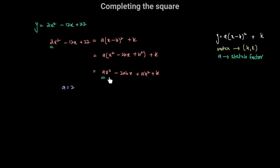The coefficients of x also have to be the same on both sides. On the left-hand side the coefficient of x is negative 12, and on the right-hand side it is negative 2ah. So we have negative 12 equals negative 2 times 2 times h, which gives negative 12 equals negative 4h, and therefore h is equal to 3.